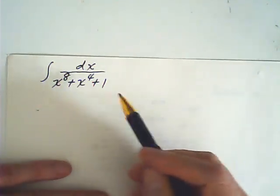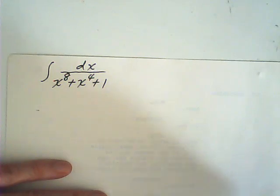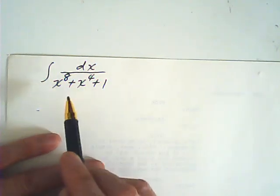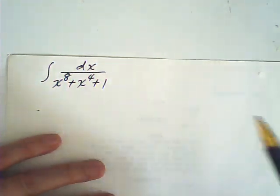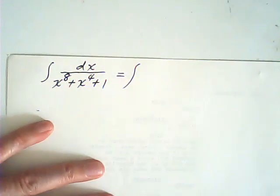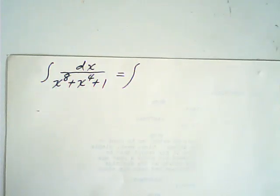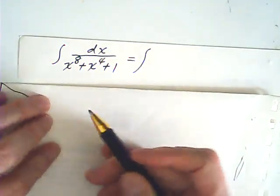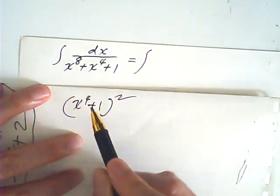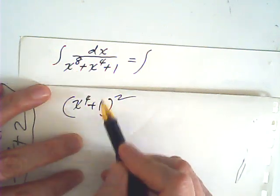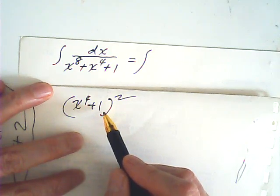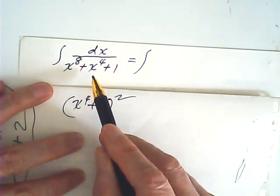This is a type of integral dealing with polynomials in the denominator. We have to first factorize the denominator. How do we factorize the denominator? Well, we can do it this way. This is x⁴ plus one, squared. The midterm is two x⁴, but I have only one x⁴.